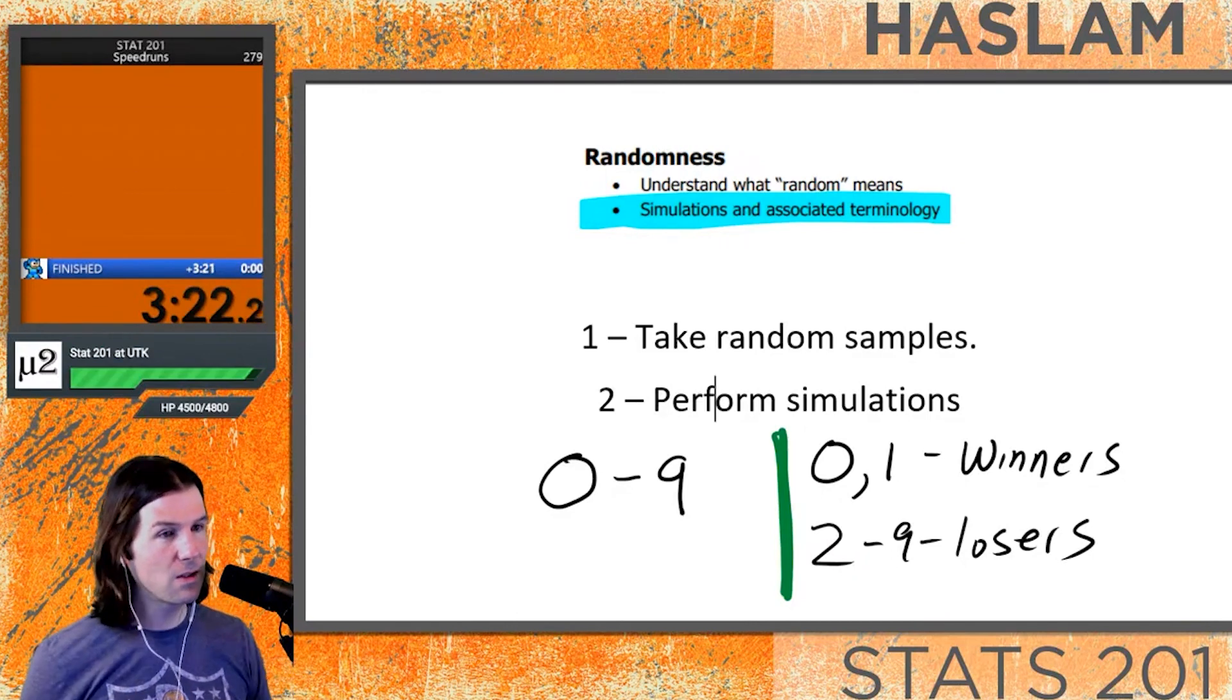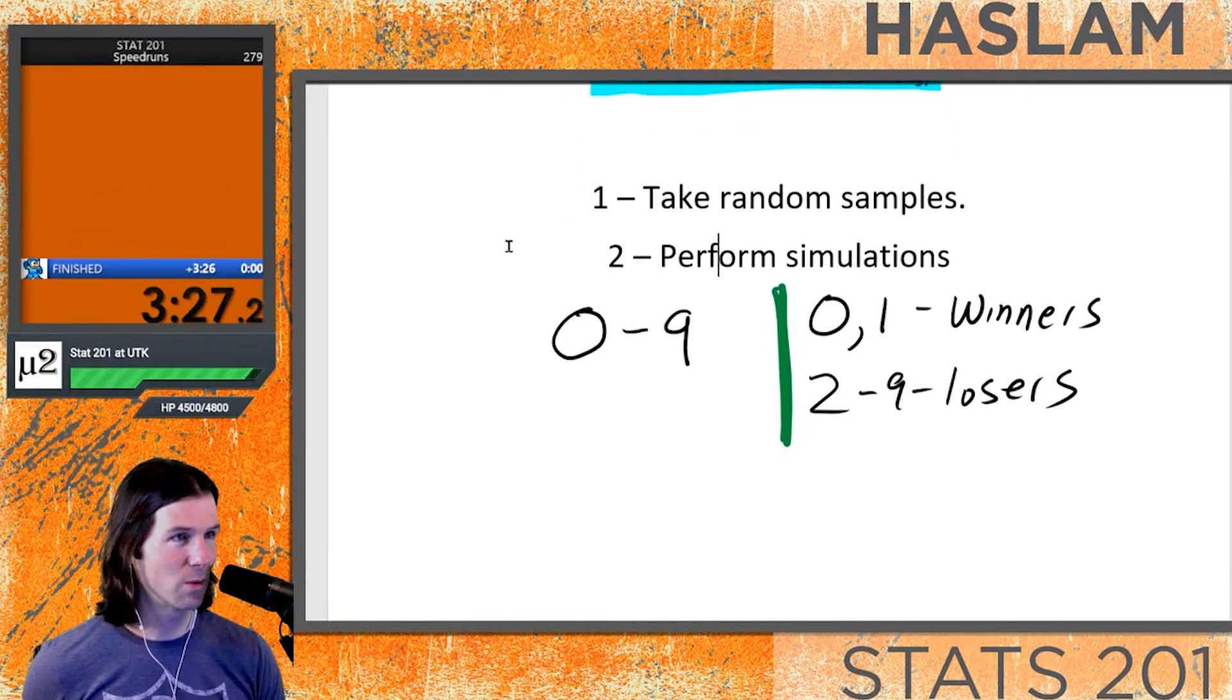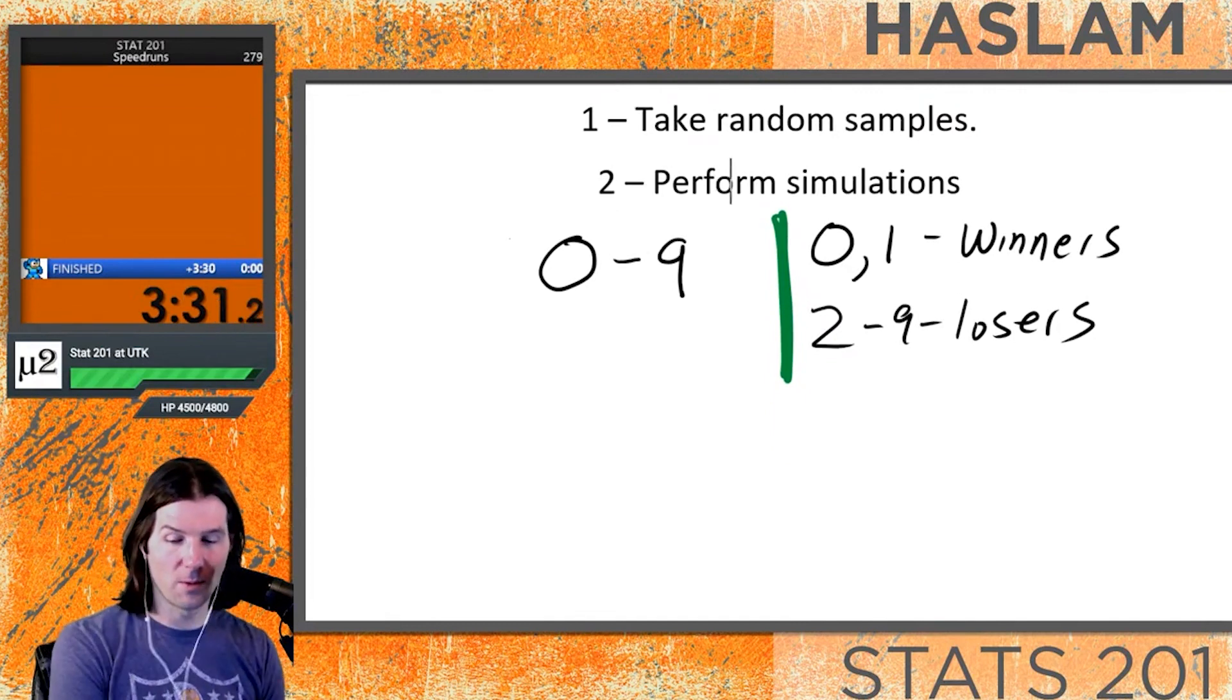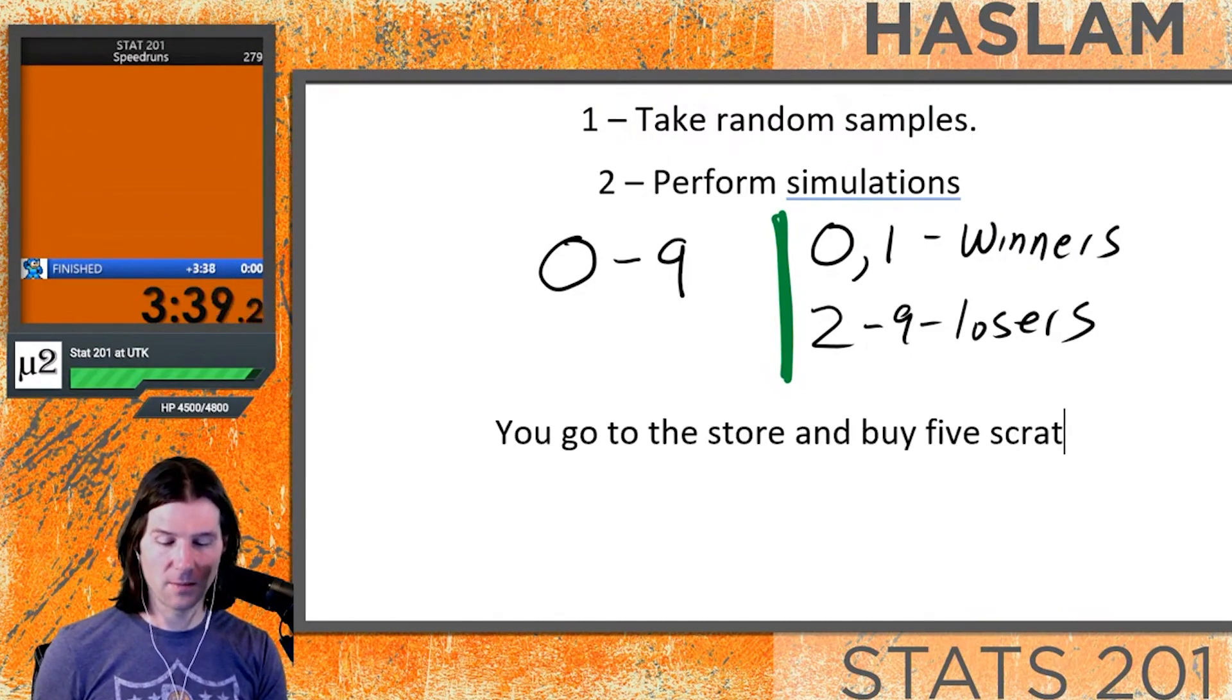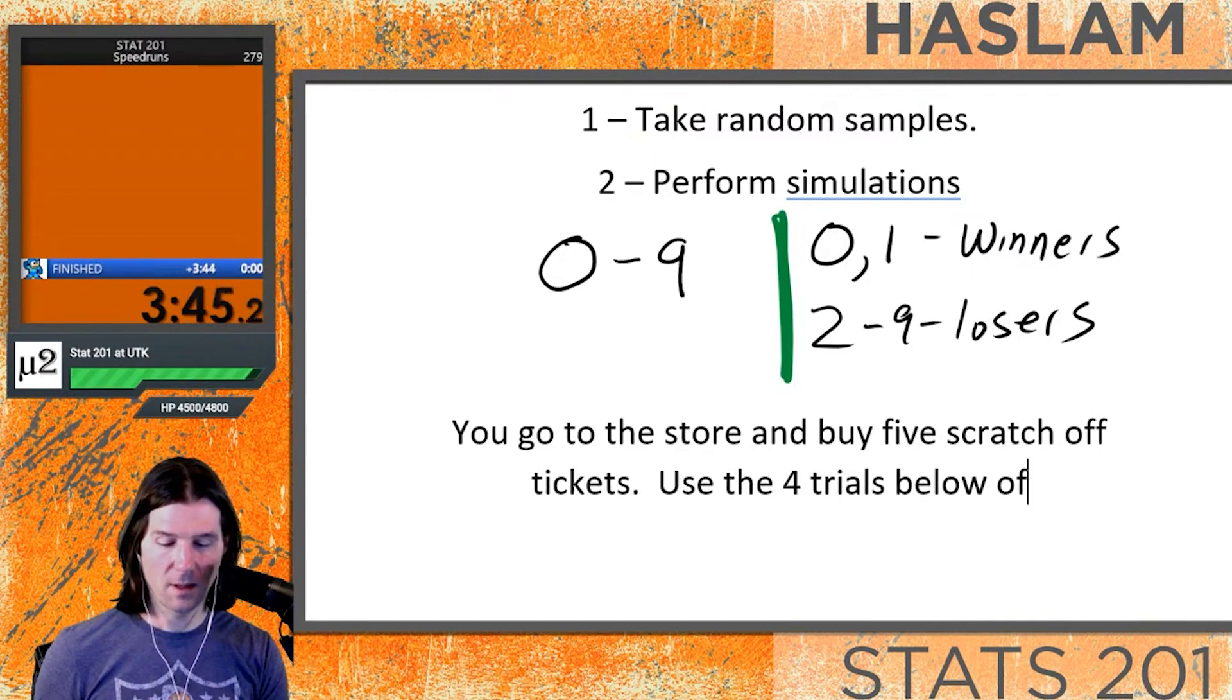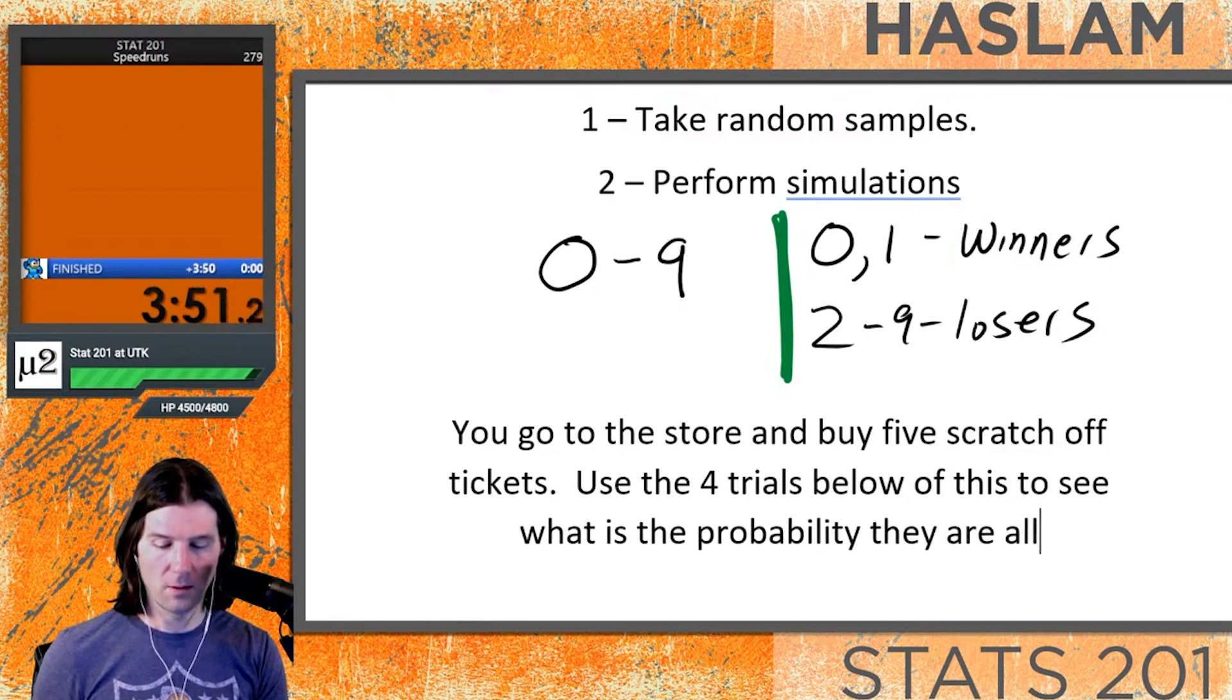Let's say the simulation question asks: you go to the store and buy five scratch off tickets. Use the four trials below of this to see what is the probability they're all losers.